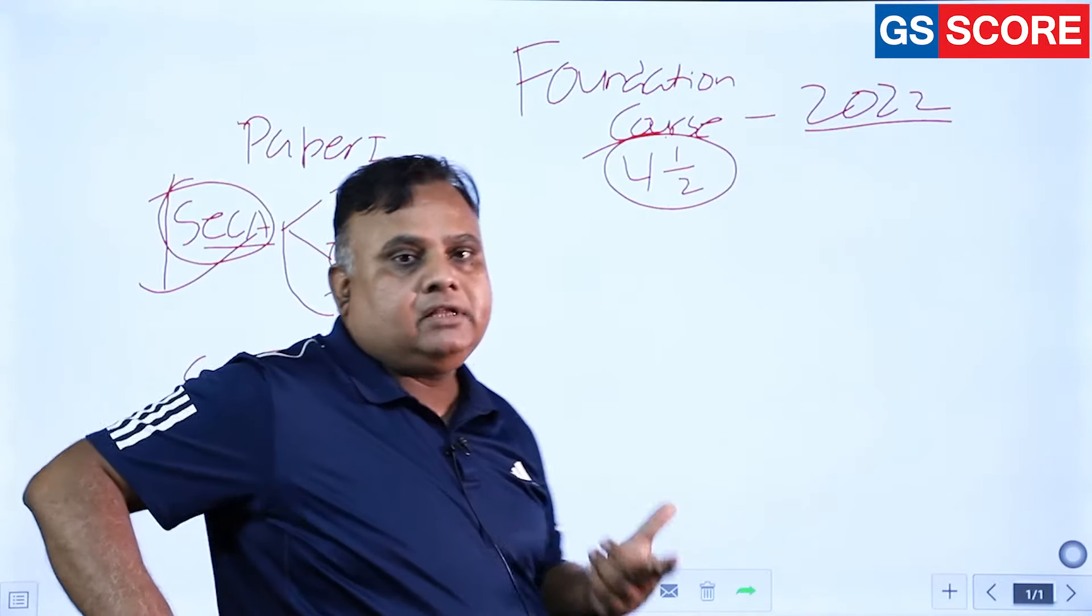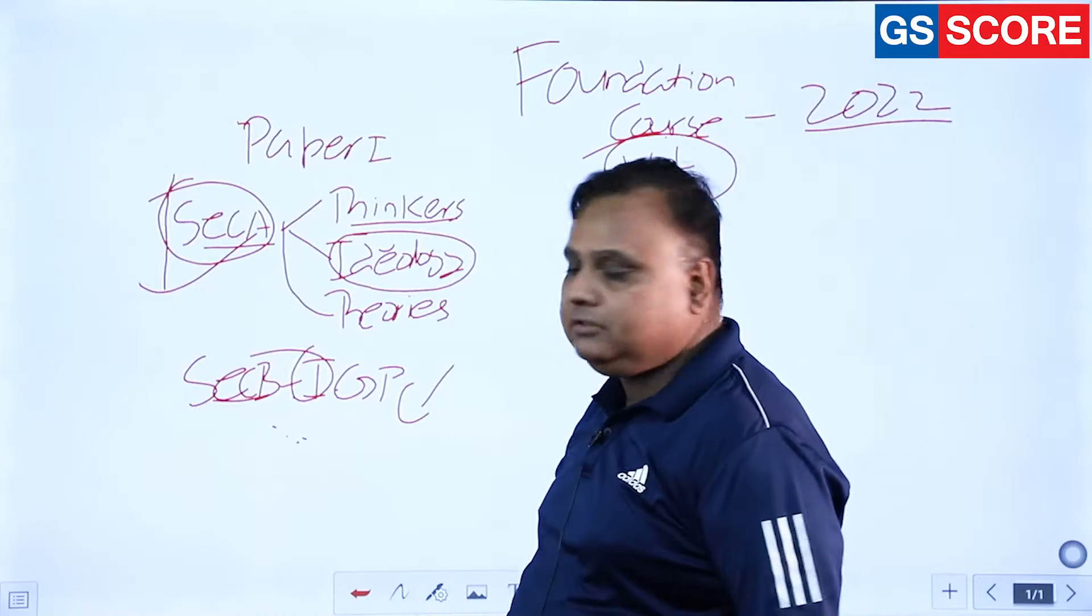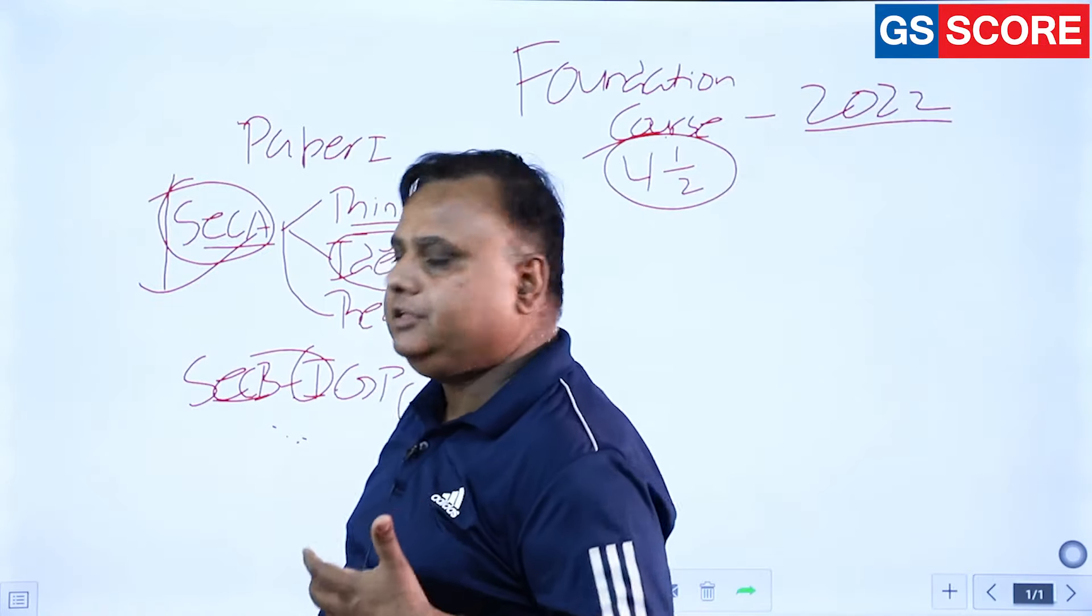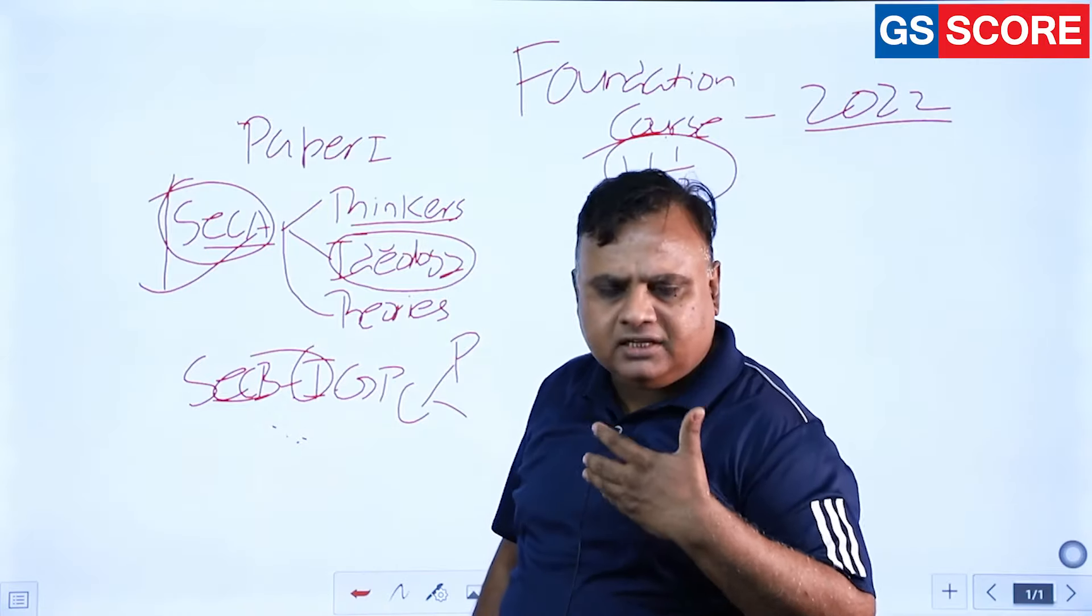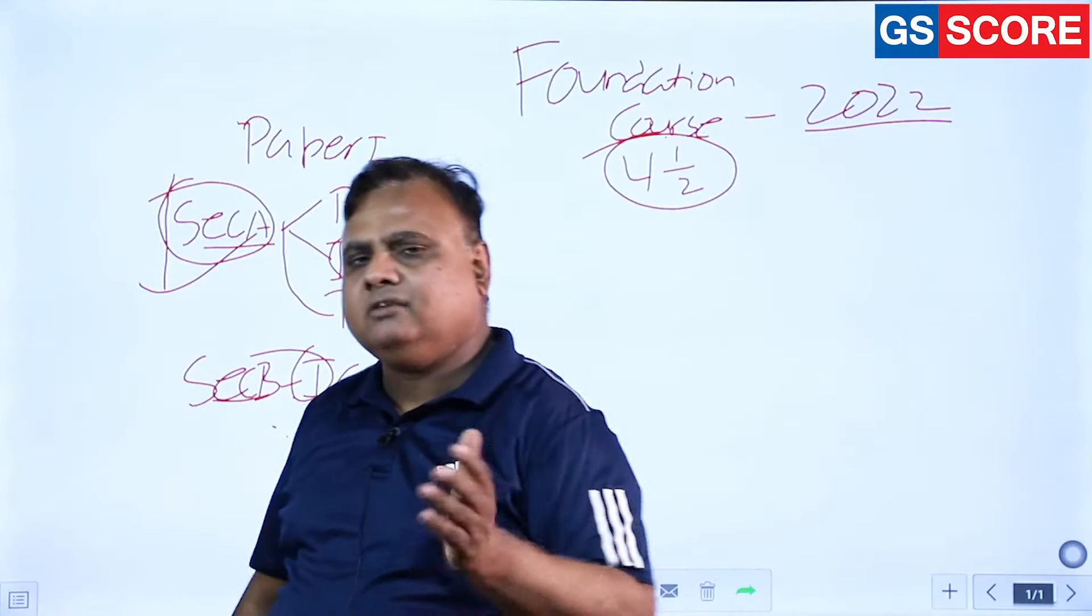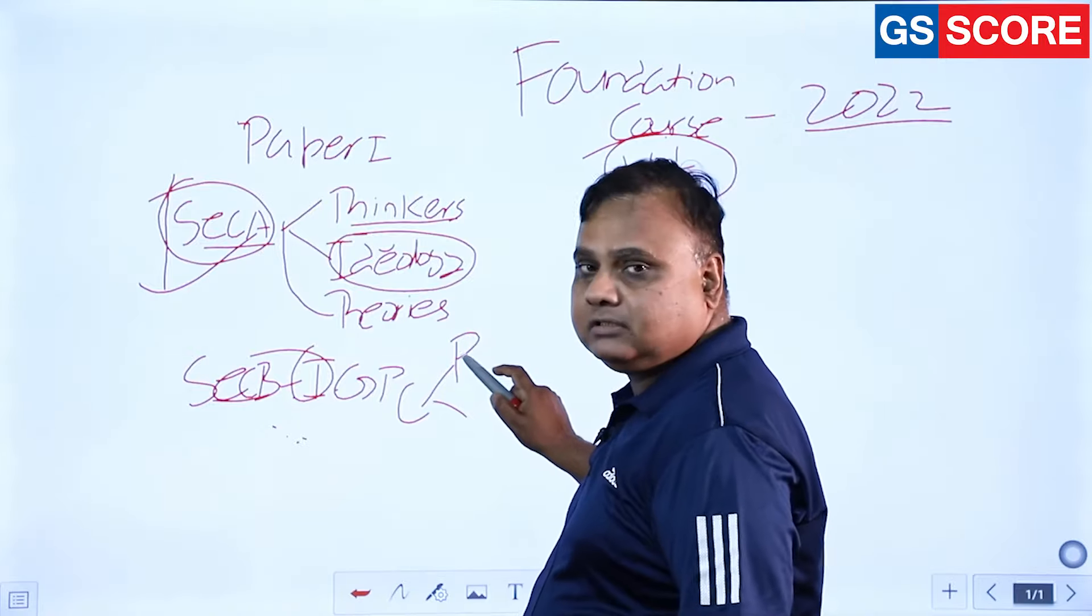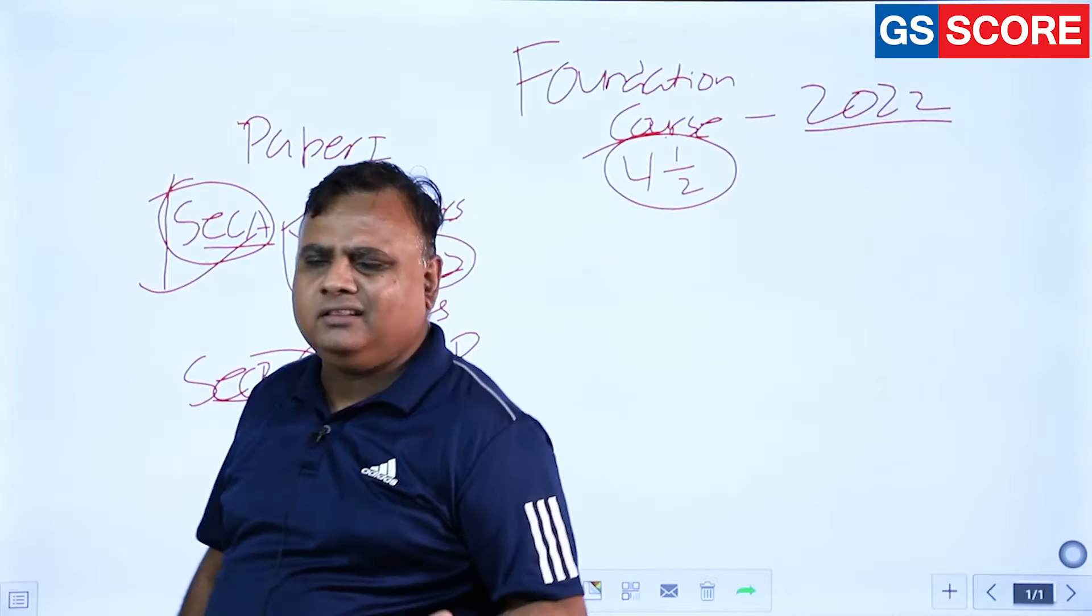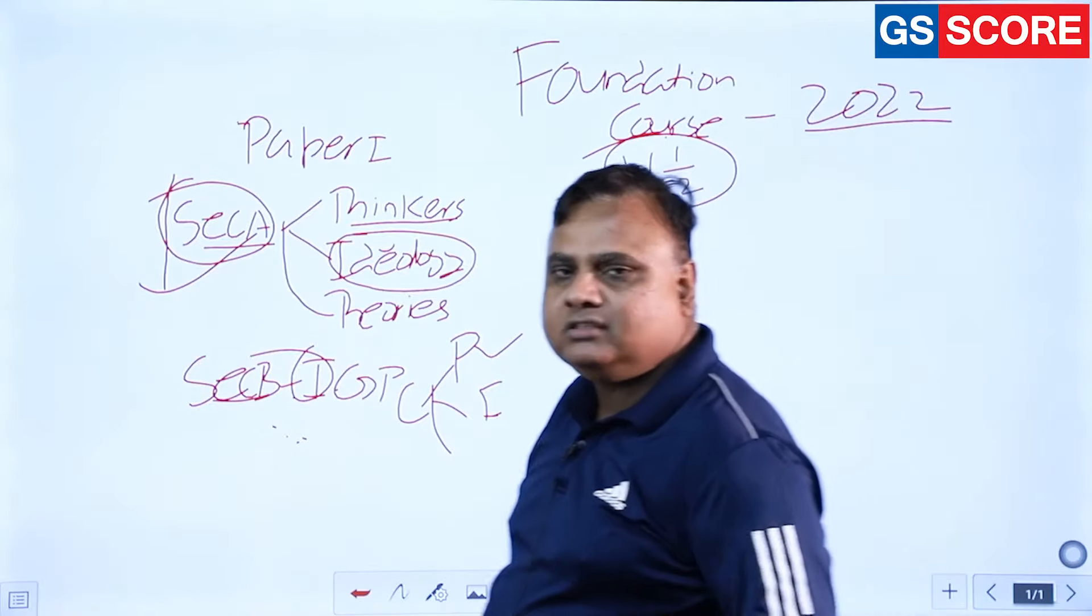Then you have to study the constitution. In constitution, further there is a division. First up to till part 4, they are mainly principles, and then institutions come from part 5, that is union government in part 5, state government in part 6, union territories in UTs in part 8 and so on. First we will discuss the principles in order, because in constitution the constitution makers have given the order, we have to maintain the same.